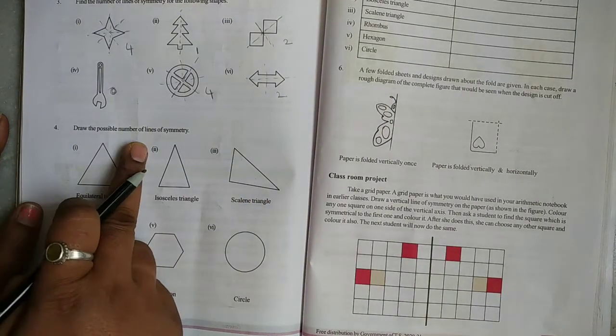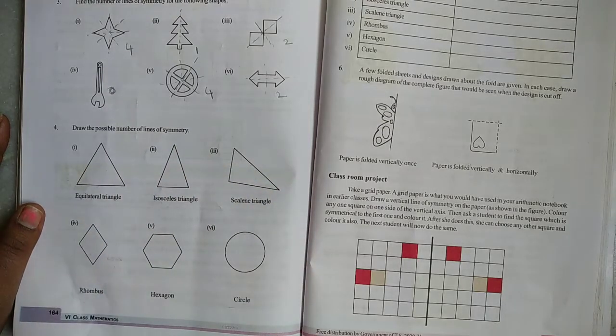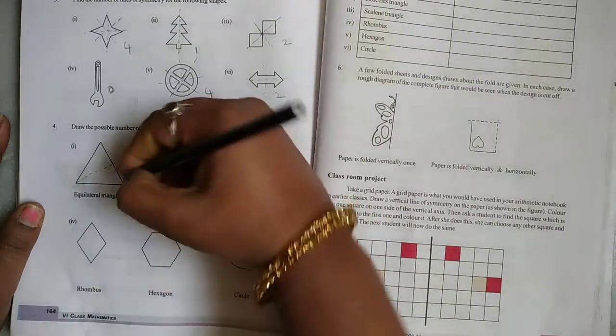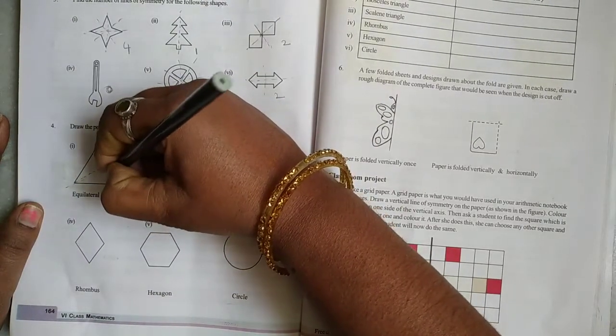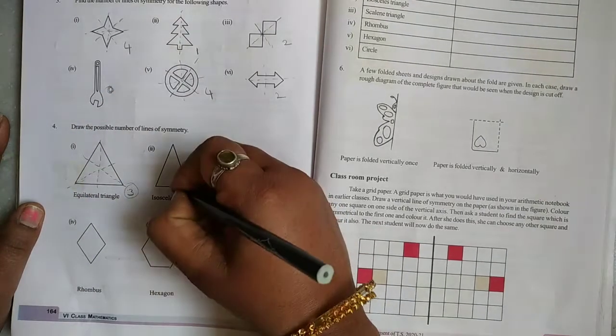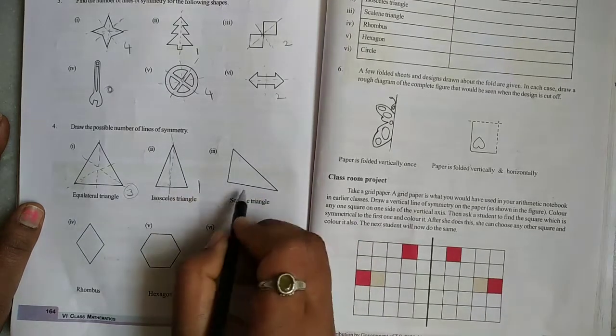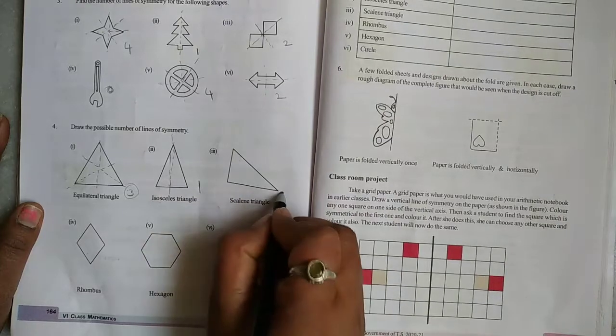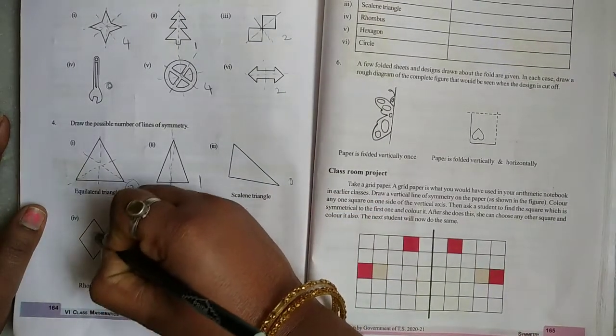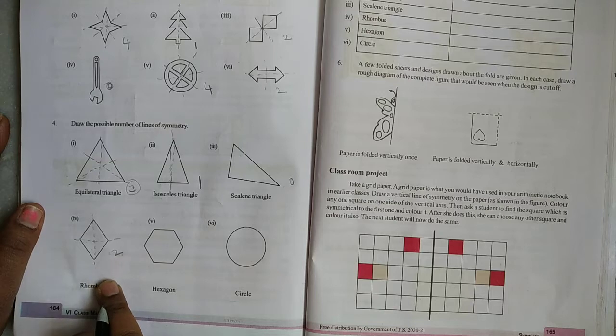Next, fourth one: Draw the possible number of lines of symmetry. Only 1. You can draw the possible number of lines. It's 0. Next, rhombus: 1, 2. Rhombus has 2 line symmetry.